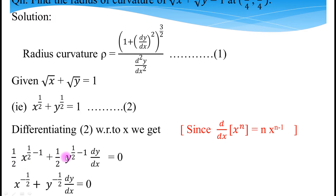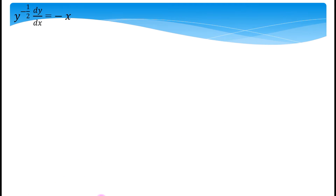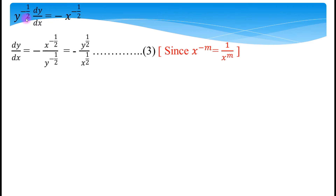Dividing throughout by 1/2, the equation becomes x^(-1/2) + y^(-1/2)·(dy/dx) = 0. To find dy/dx, move all other terms to the right side: y^(-1/2)·(dy/dx) = -x^(-1/2). Then divide both sides by y^(-1/2), giving dy/dx = -x^(-1/2) / y^(-1/2).